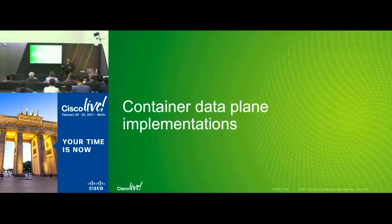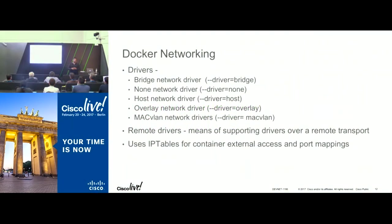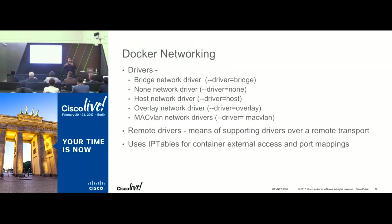Now let's double-click on the data plane implementation. The CNM model exists in Docker and the CNI model in Kubernetes, with reference implementations for each. For Docker's CNM, there are several drivers available right out of the box. Starting with the bridge network driver — this is the default driver in Docker. Then there's the none driver, where you specify no network connectivity for containers. And the host network driver, which tells the container not to use its own network namespace, but to use the host networking stack itself for forwarding packets.